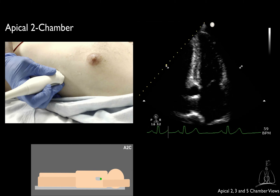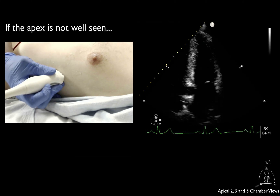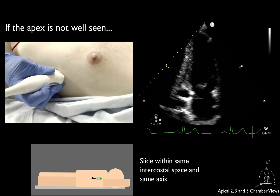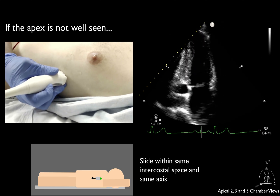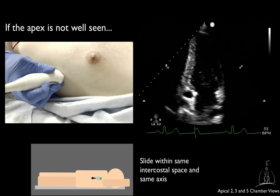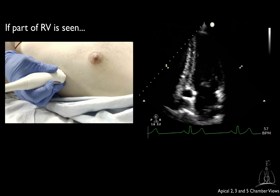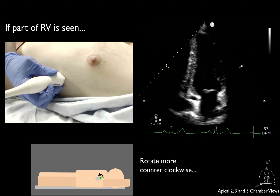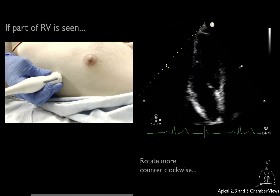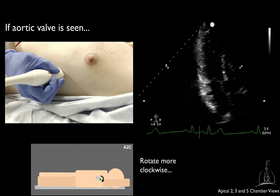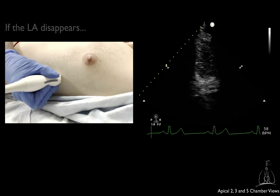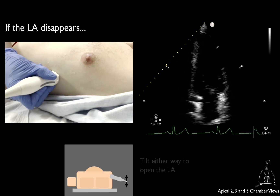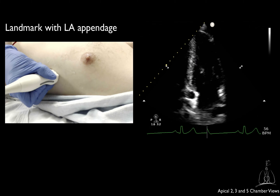The marker should be oriented towards the patient's axilla. If the apex is not well seen, try to slide within the same intercostal space in the same axis. If you see part of the RV, rotate more counterclockwise. If you see the aortic valve, rotate clockwise. If you lose the opening of the atrium, you may have to tilt either way to reopen it. A good landmark to indicate that you have an appropriate view is to visualize the left atrial appendage.